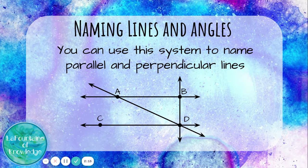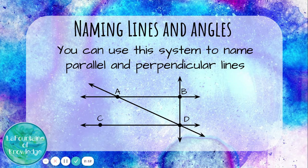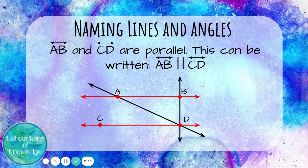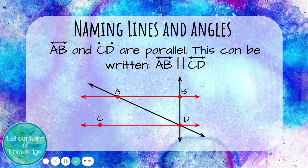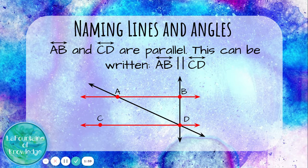You can use this system to name parallel and perpendicular lines. AB and CD are parallel. This can be written line AB is parallel to line CD. The symbol in the middle that looks like two parallel lines is the symbol for parallel.